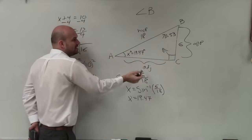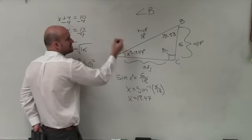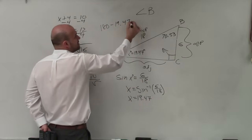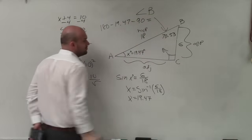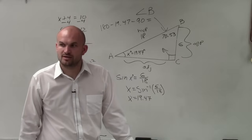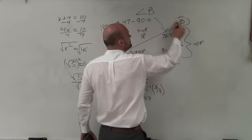Now, if I want to find angle B, I take 180, right, because all the angles in a triangle add up to 180. So I say 180 minus 19.47 minus 90 degrees equals my angle B. But I can also do this one other way. I'm going to do this really quickly. What about if I just wanted to find B directly?